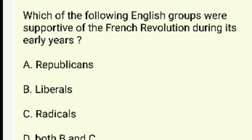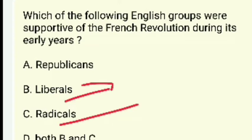Which English groups were supportive of the French Revolution during its early years — Republicans, Liberals, Radicals, or both B and C? The answer is both B and C — both Liberals and Radicals supported the French Revolution.